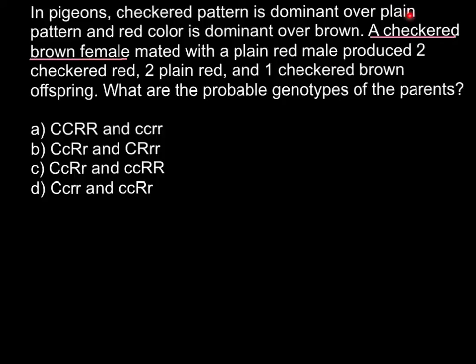So the possible genotypes for the female would be capital C capital C or capital C small c. Both allele variants would produce a checkered pattern. And we also know this female is brown color.